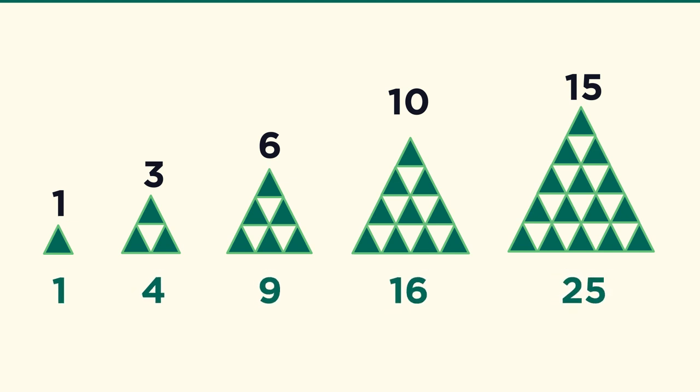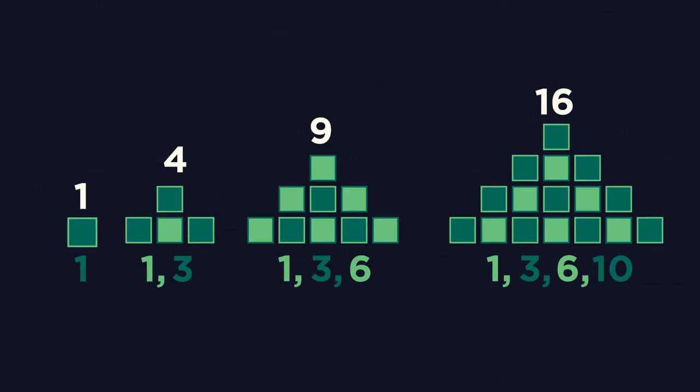You can also see triangle and square numbers together in this pattern. If you count alternating colors exactly, you get triangular numbers. If you count the total, you guessed it, square numbers.